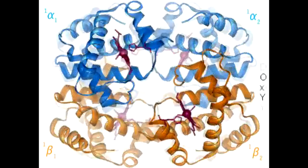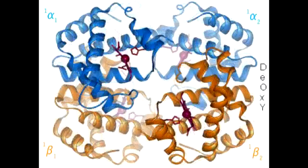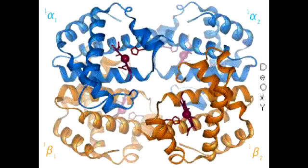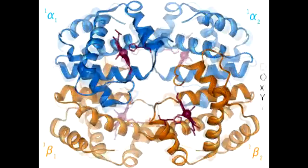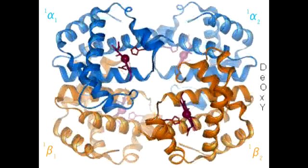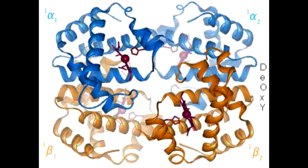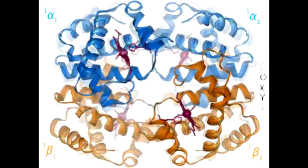What is the mnemonic to help you remember the taut form and the relaxed form? The mnemonic is to remember that the taut form is found in tissues because of the low affinity for oxygen. So remember T for taut and T for tissue, whereas the relaxed form is found in the respiratory system, R for relaxed and R for respiratory.